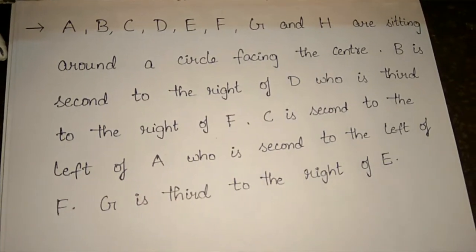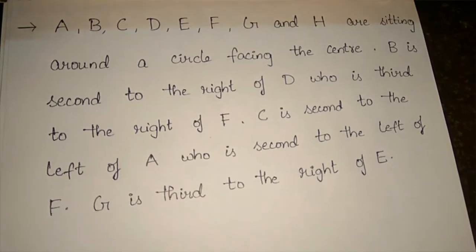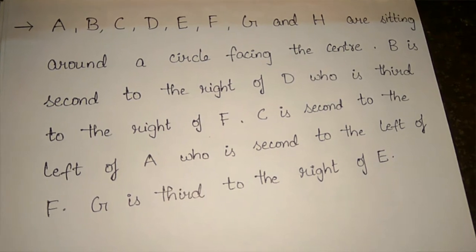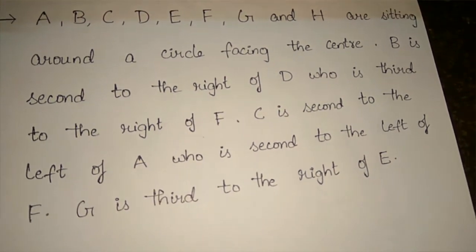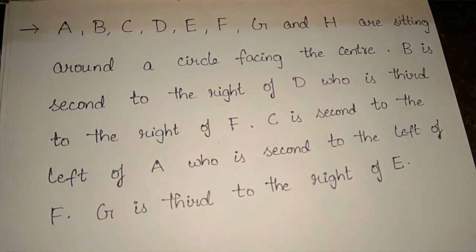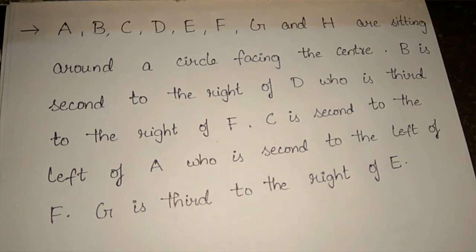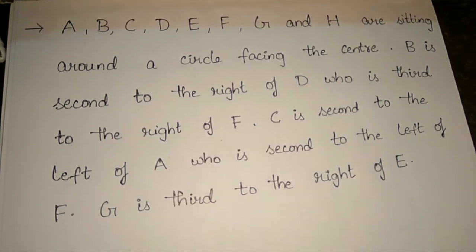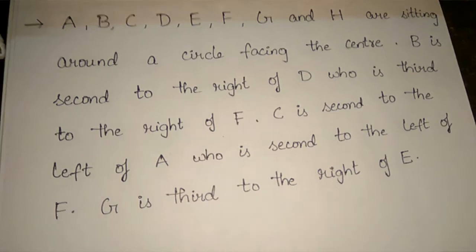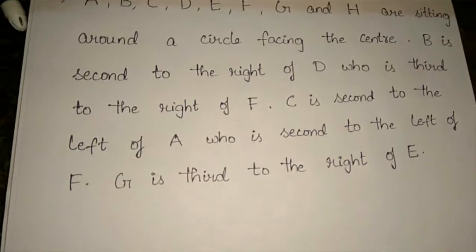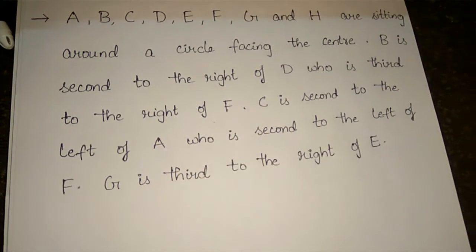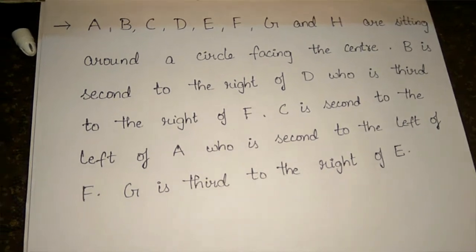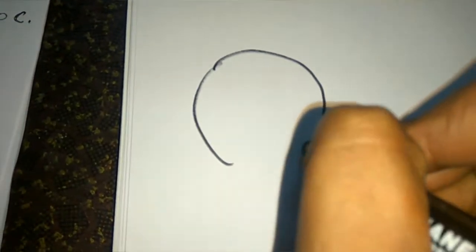Hi friends, welcome to Government Jobs Portal. This is the third example in the circular seating arrangement series. We have members A, B, C, D, E, F, G, H — eight members seating around a circle facing the center. Let's draw a diagram with all eight members.